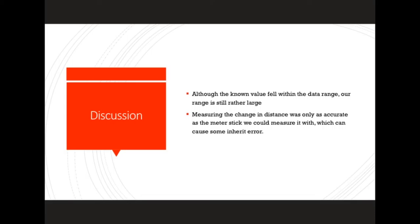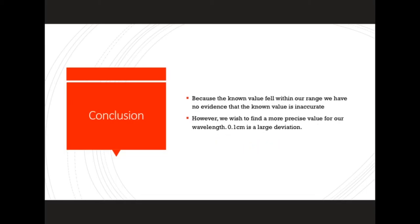Measuring the change in distance was only as accurate as the meter stick we could measure with, introducing some inherent error. The meter stick is only accurate to 0.1 centimeters. This 0.1 centimeters is roughly 3.5% of the overall wavelength that we were looking for. Because the known value fell within our range, we have no evidence that the known value is inaccurate. However, we want to find a more precise value for our wavelength. 0.1 centimeters is a large deviation.